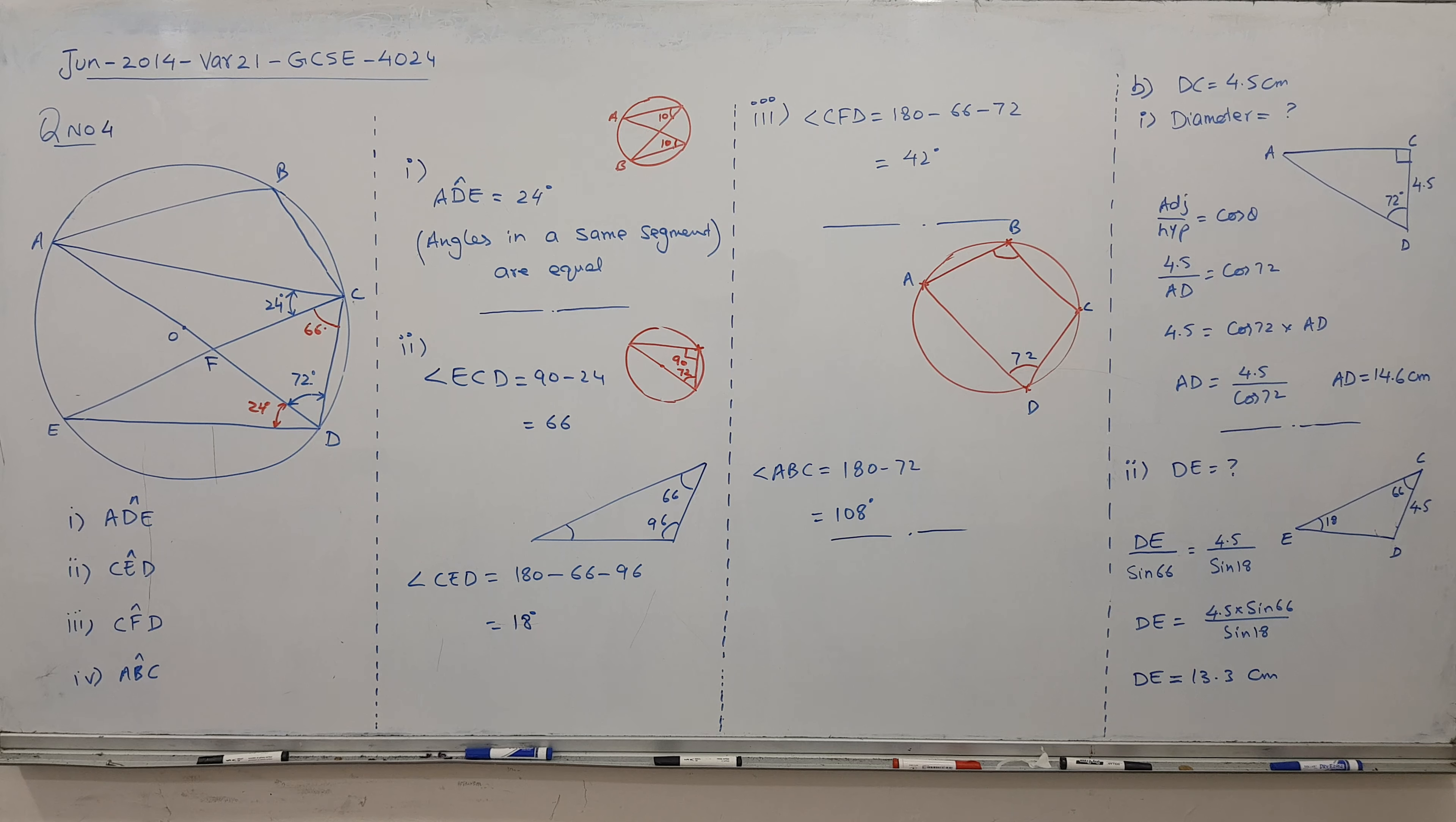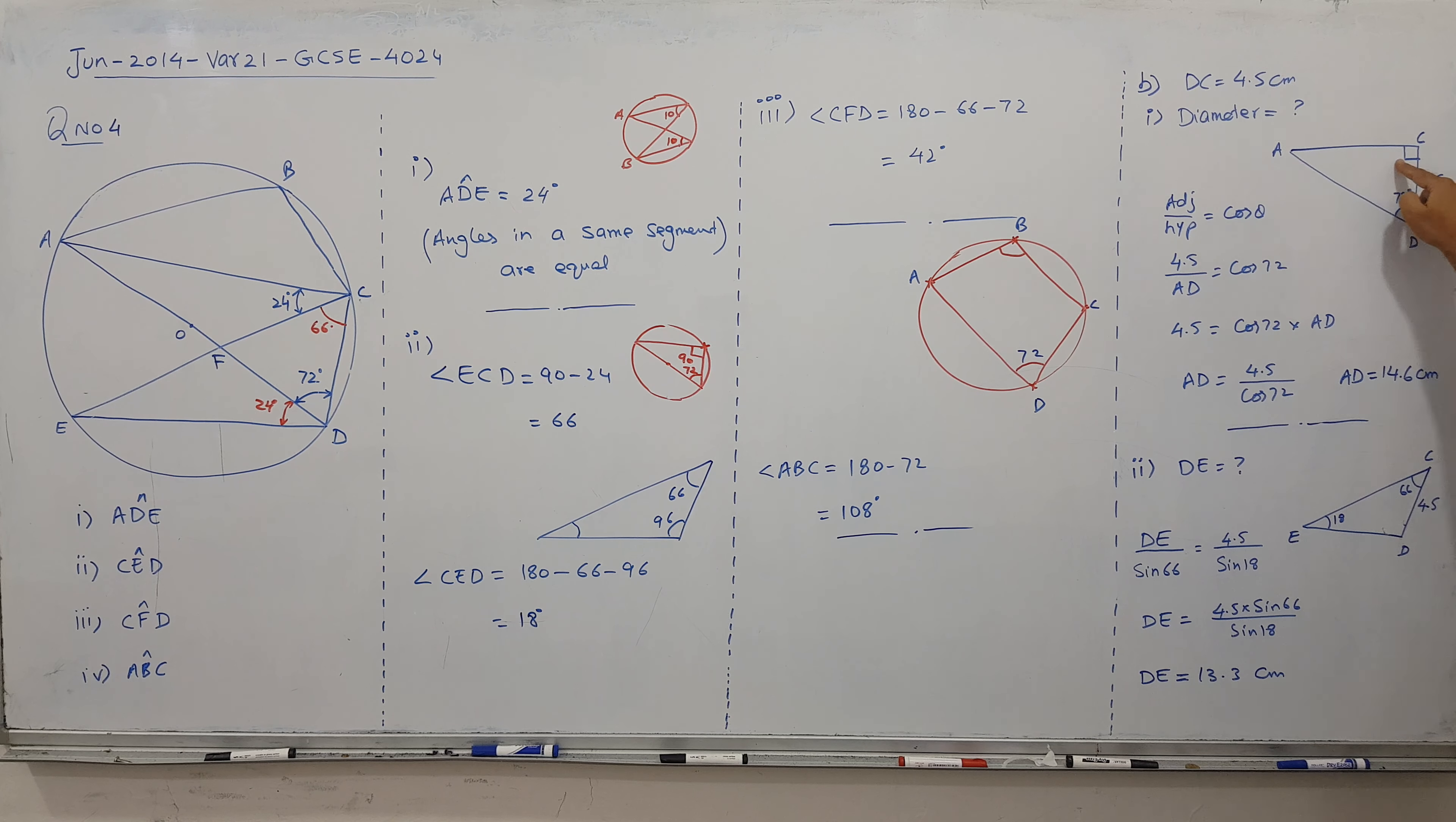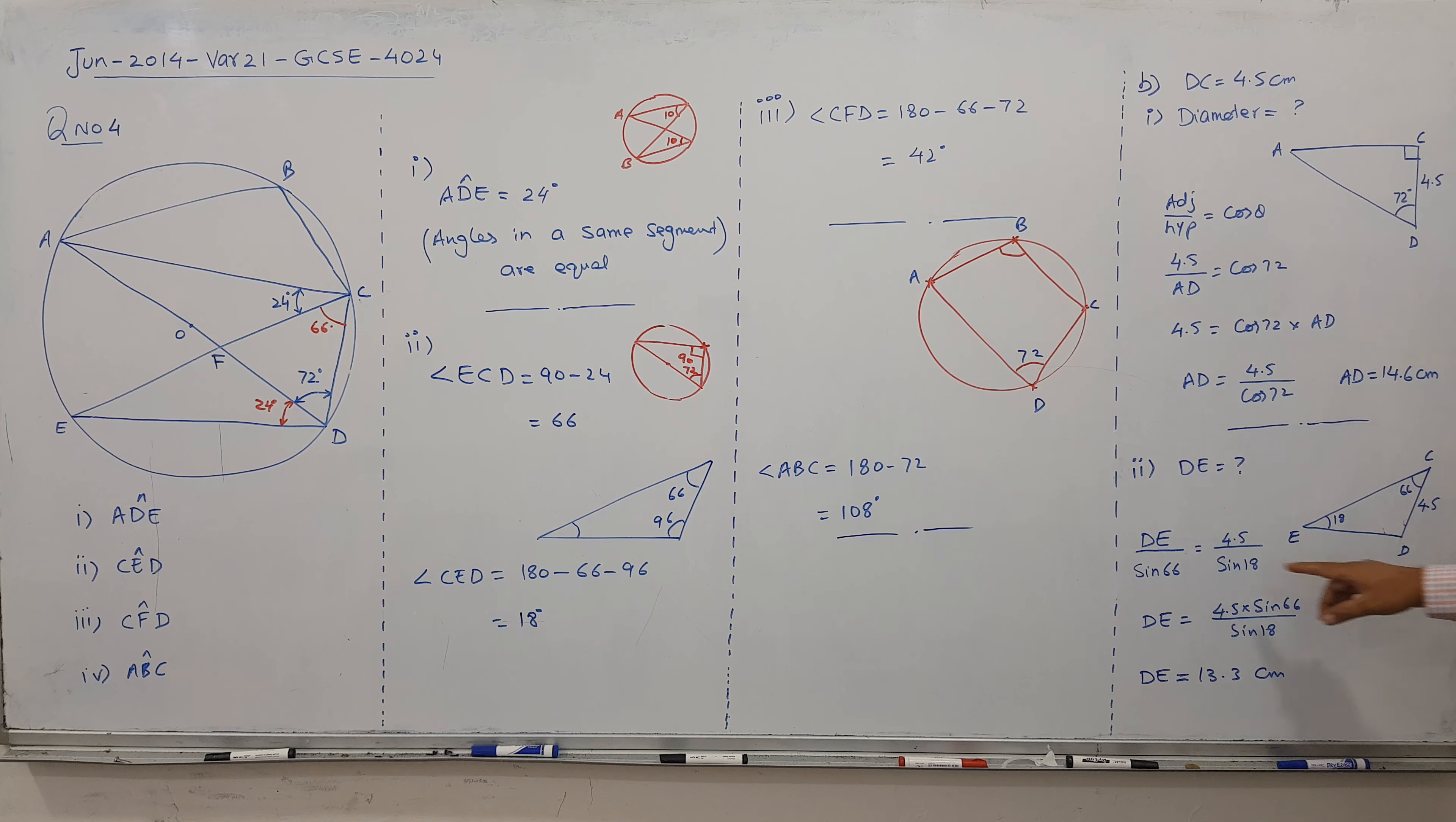Sorry, the vision was not clear. I am fixing the camera now and revising once again. For triangle ACD, this is 72, this is 90. Adjacent by hypotenuse, adjacent is there, hypotenuse is unknown. For triangle EDC, CD is 4.5, with angles 66 and 18. Use sine rule: DE divided by sine of 66 equals CD divided by sine of 18. Cross multiply, and the problem is finished.